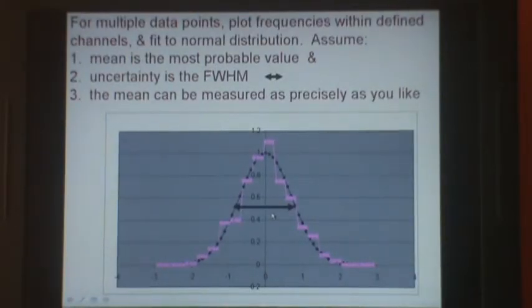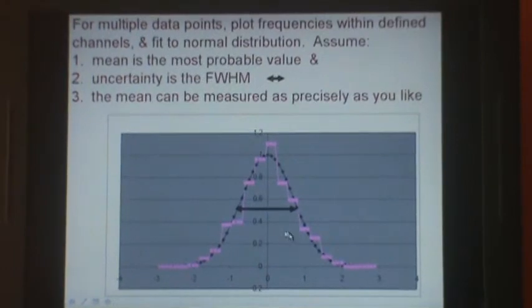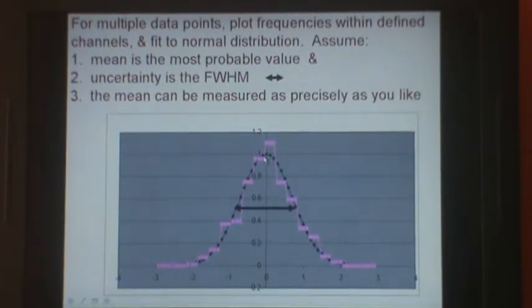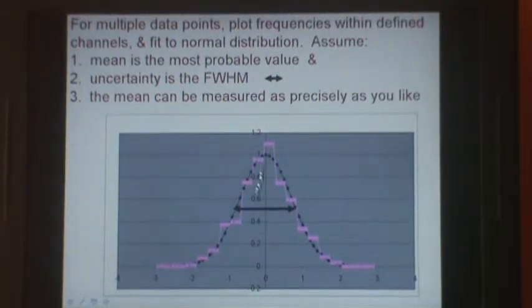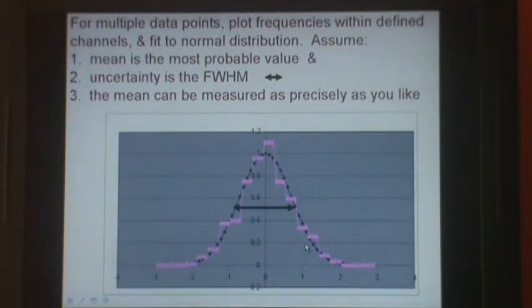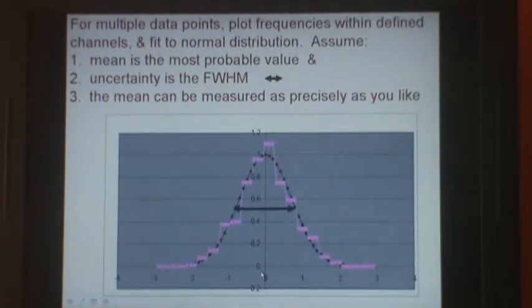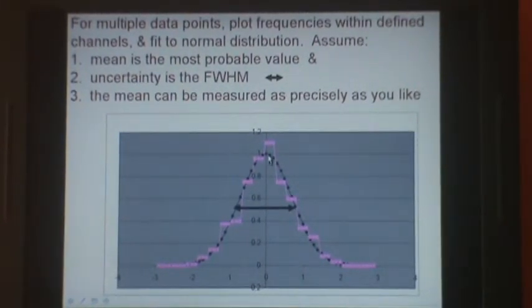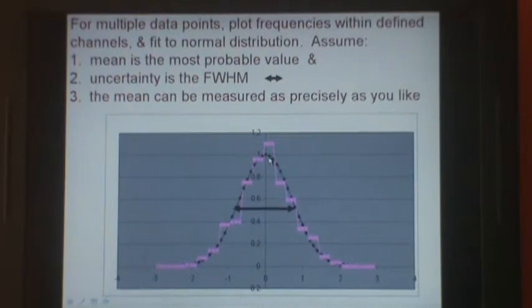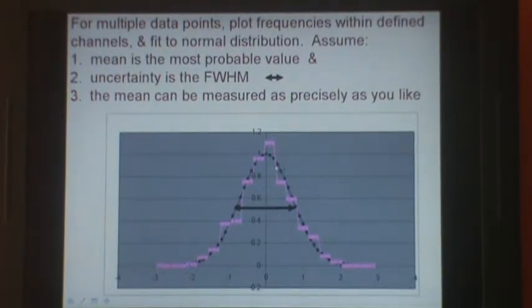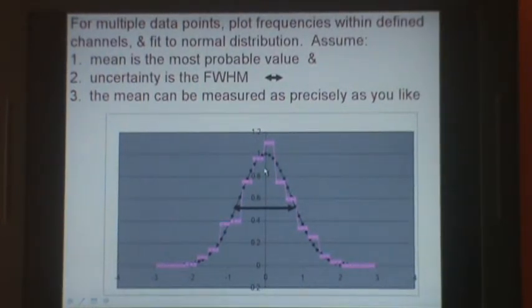What about multiple measurements? We divide the measurements into channels and plot the frequencies in those channels, and fit them to a normal curve. Then we make an assumption. We assume that the most probable measurement is the peak of that normal curve, and the full width half maximum is the uncertainty. We can make that mean measurement as accurate as we like by increasing the number of data points.